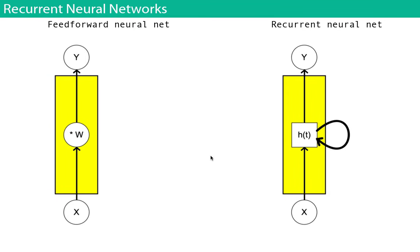The nice thing about recurrent neural networks is that, being another type of neural network, they inherit a lot of the same properties of ordinary neural networks and convolutional networks that we've already seen. We can bootstrap our understanding of them from there and then talk about what they do differently. The main thing they do differently is they have an internal state which actually changes over time as it accepts new inputs.